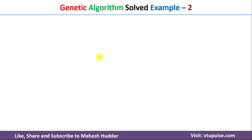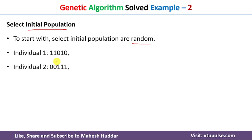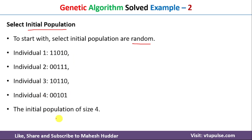The next step in a genetic algorithm is to select the initial population. If it is not given, we randomly select chromosomes from the set of possible solutions to form the initial population. In this case the initial population is already given — four chromosomes — so the initial population size is four.